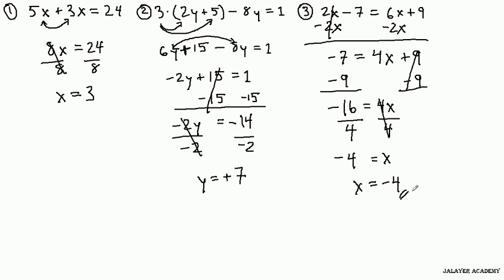Okay? And we can plug this back in to check that it's right. So instead of x, we put negative 4 in place of it. We get 2 times negative 4, which is negative 8, minus 7. So let's write that down. Get negative 8 minus 7 equals negative 4 times 6, which is negative 24 plus 9. Let's see.